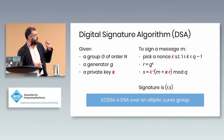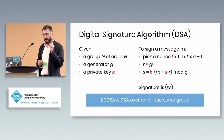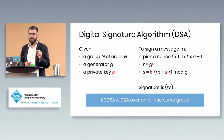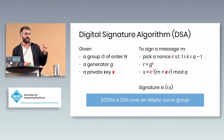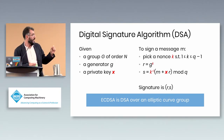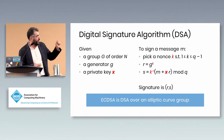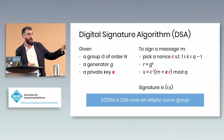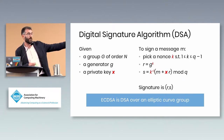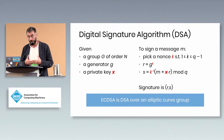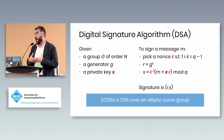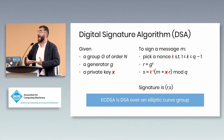One important thing to stress: the nonce k must be kept secret. If you find out what k is, you can recover the secret key x from the second part of the signature. You can only reveal g^k, not k itself.